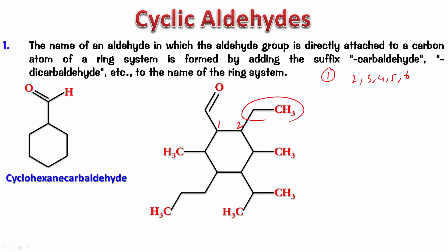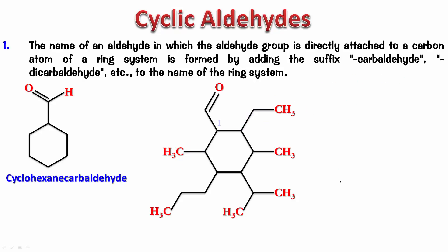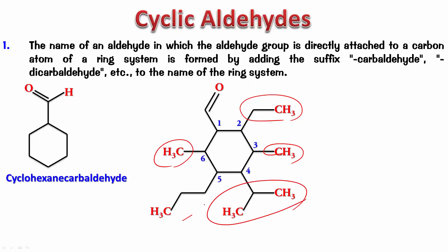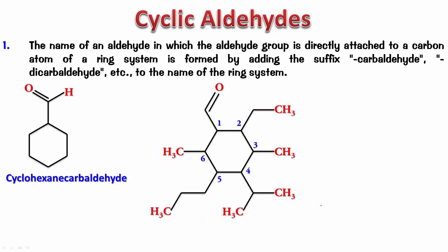Going anti-clockwise, position two is ethyl and position two clockwise is methyl. Alphabetically, ethyl comes before methyl, so ethyl should get the lower number two — meaning we number anti-clockwise. The substituents are: ethyl, two methyls, isopropyl, and propyl. So the name is 2-ethyl-4-isopropyl-3,6-dimethyl-5-propylcyclohexane carbaldehyde.